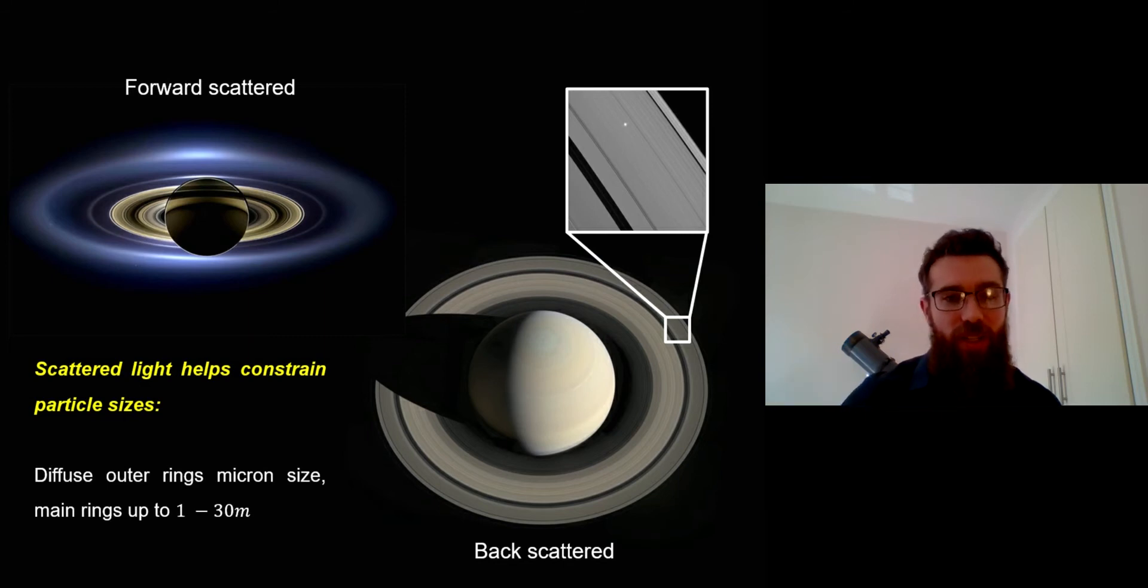You can see these outer rings are visible in this particular configuration. Now normally from earth we can only see the back scattered view of Saturn or the rings, which is down on the bottom right. That is just the light that has been reflected back off the ring system back towards where the light source is.